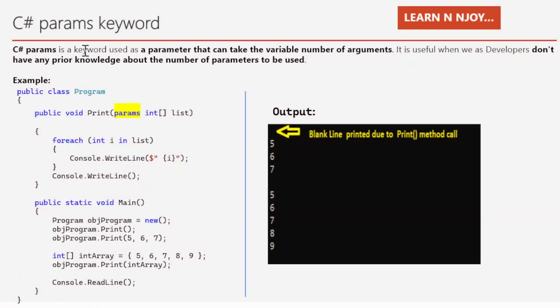What is the C# params keyword? C# params is a keyword used as a parameter that can take a variable number of arguments. Variable number of arguments means we can simply specify any number of arguments in the method call. It is useful when we as developers don't have any prior knowledge about the number of parameters to be used.